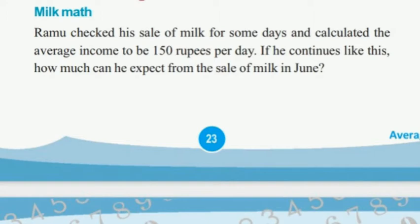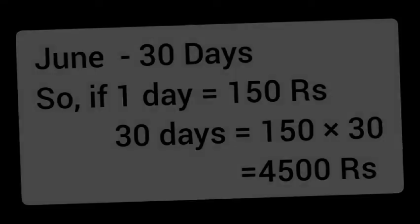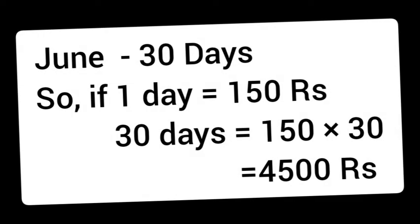If we continue like this, June has 30 days. So if one day is 150 rupees, then 30 days is equal to 150 into 30. And in June, we get 4,500 rupees.